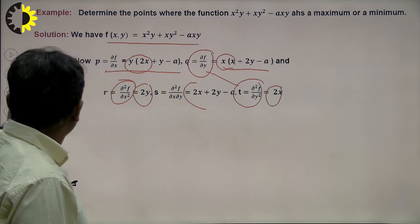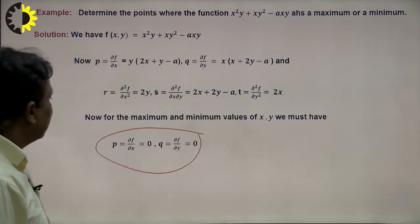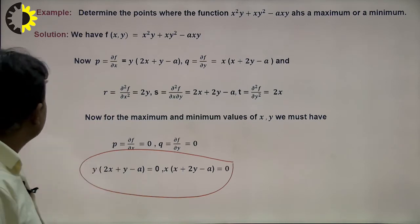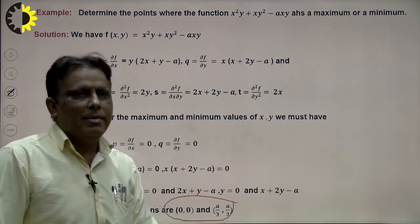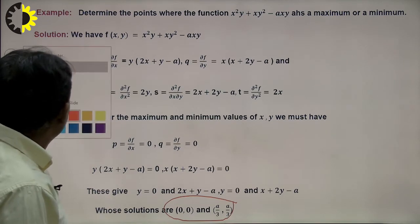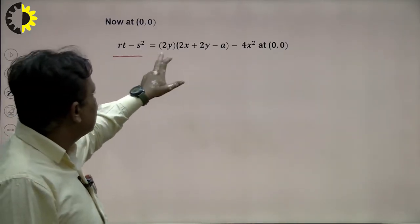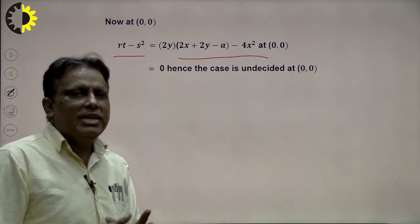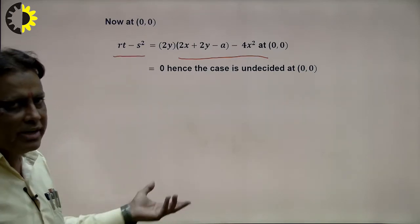Setting the first derivative equal to 0, we find two equations. Solving these equations gives two points: (0, 0) and (a/3, a/3). We check rt − s² at the point (0, 0): the result is 0. That means we cannot decide if the function is maxima or minima — this is a doubtful case and requires further investigation.